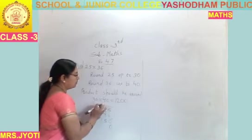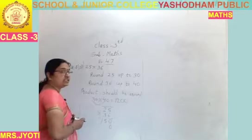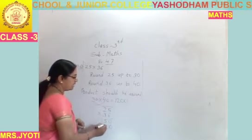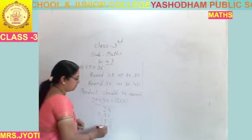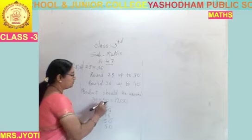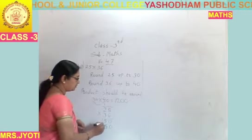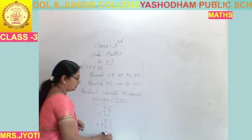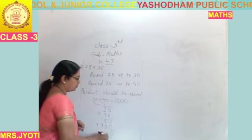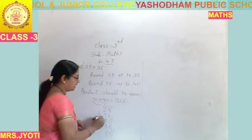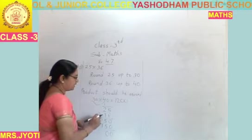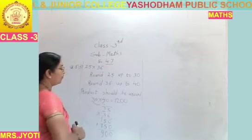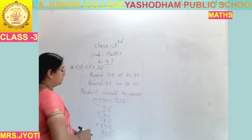When we multiply — 0. 5, 3 threes are 15, carry 1. 3 twos are 6 and 1 is 7. 0, 5, 5, 10, carry 1. 7 and 1 is 8, 8, 9.